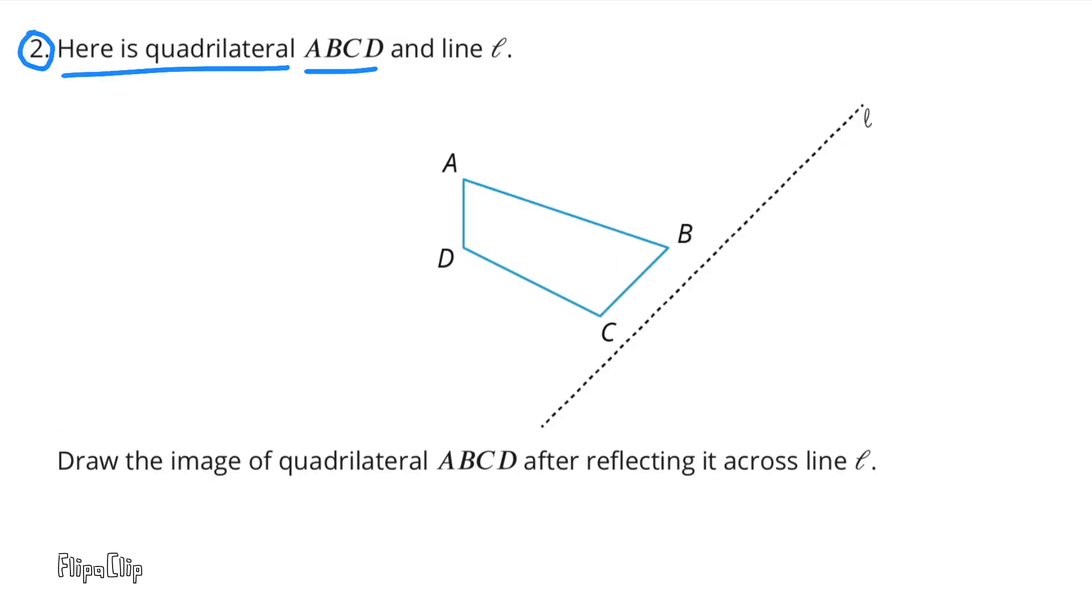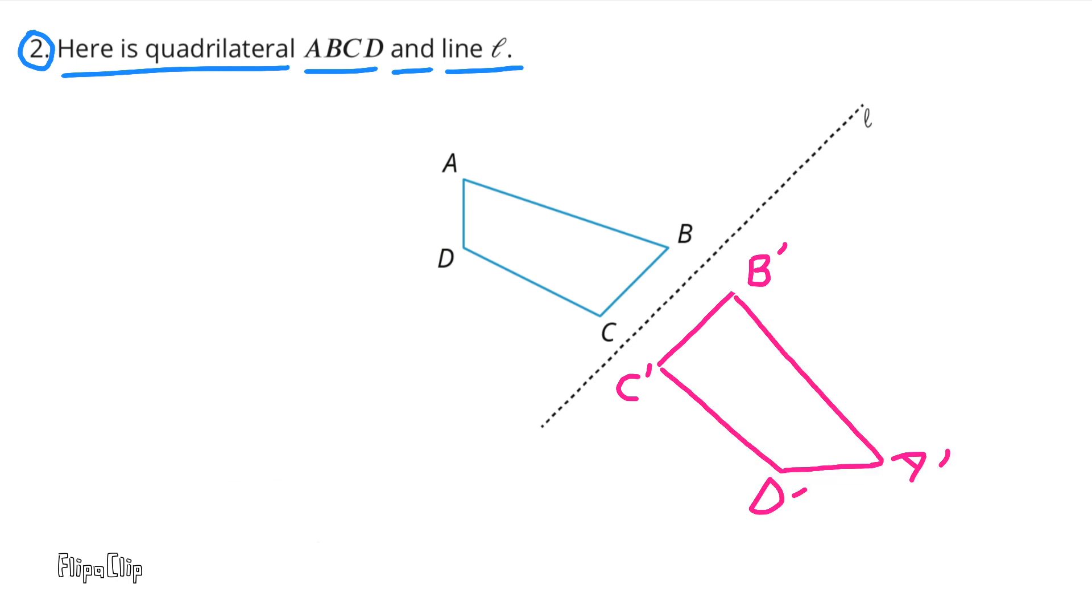Number 2. Here is quadrilateral ABCD and line L. Draw the image of quadrilateral ABCD after reflecting it across line L. Here's a look at the image after it was reflected across line L.